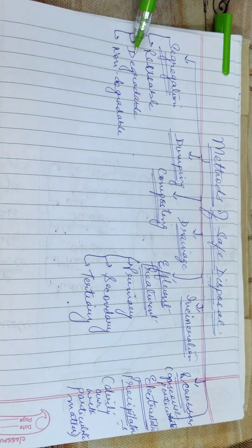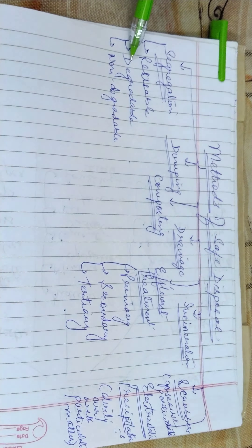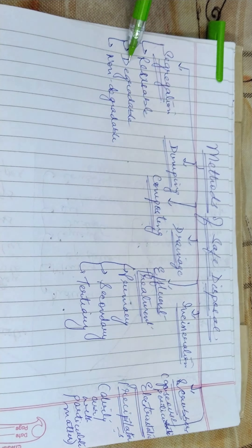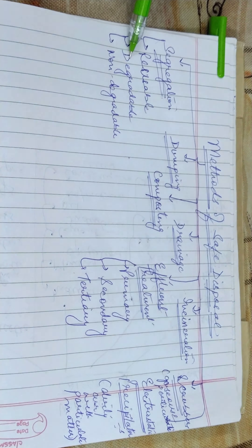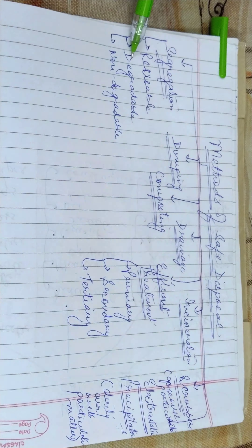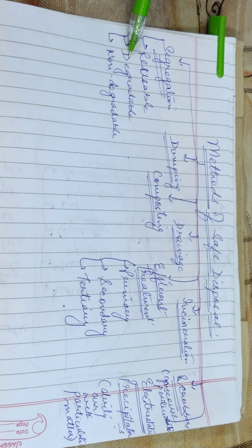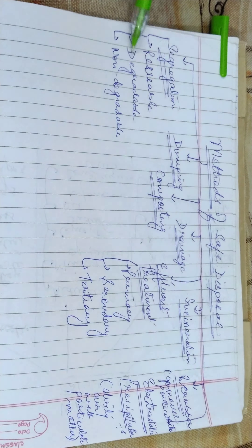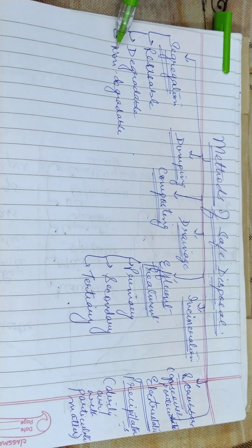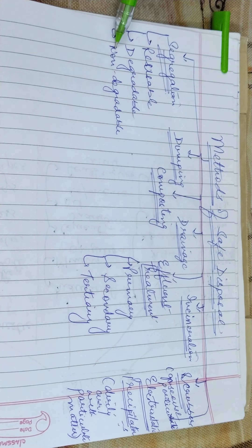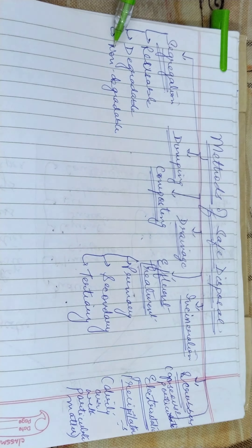Second is degradable. Degradable waste is organic waste such as vegetable and fruit peelings, which can be decomposed to form manure with the help of the activities of microorganisms. Then we come to non-biodegradable waste, which includes certain plastics that are usually dumped into landfills.